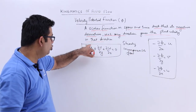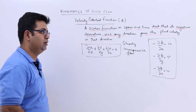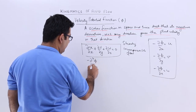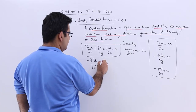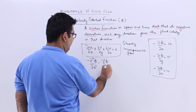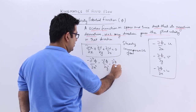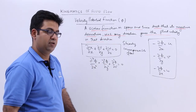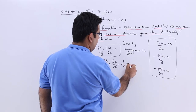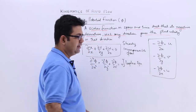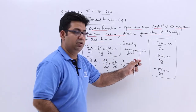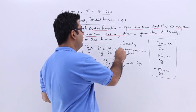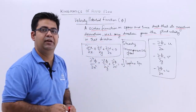If I substitute the values of u, v, and w from the definition of phi, I get: minus partial squared phi over partial x squared, minus partial squared phi over partial y squared, minus partial squared phi over partial z squared, equals zero. Taking the negative sign common gives a positive sum, and this becomes the Laplace equation. So if the velocity potential function satisfies the Laplace equation, the flow must be steady and incompressible.